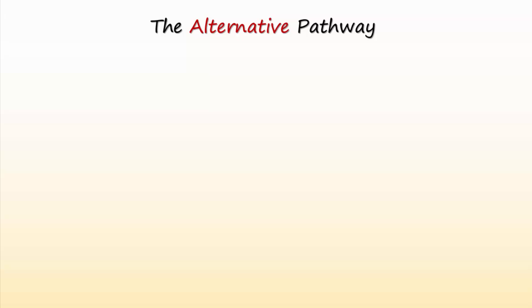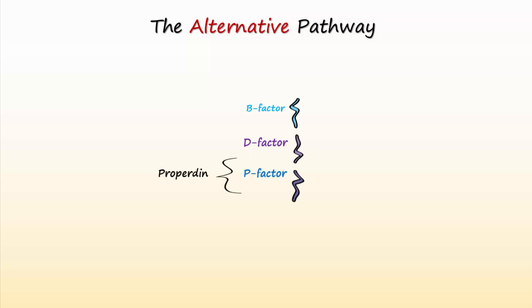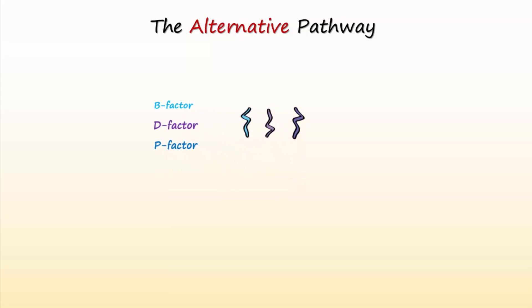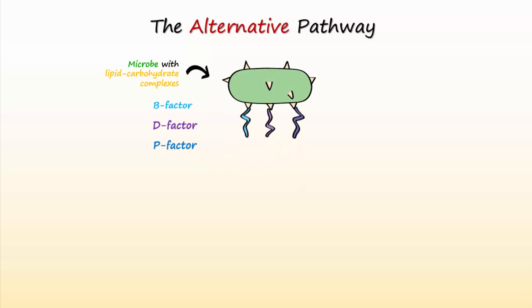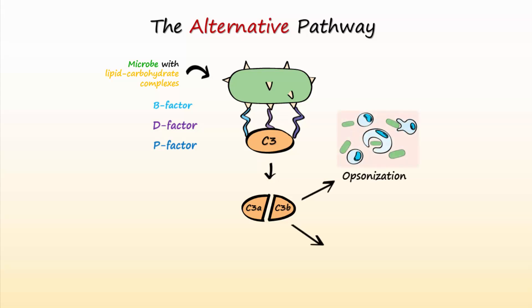The second pathway is known as the alternative pathway, because it was discovered after the classical pathway. Instead of involving antibodies, complement factors B, C3, D, and P — also known as properdin — bind to lipid-carbohydrate complexes on fungi and some bacteria. This binding activates factor C3, causing it to split into fragments C3a and C3b, which initiate opsonization, cytolysis, and degranulation of mast cells.